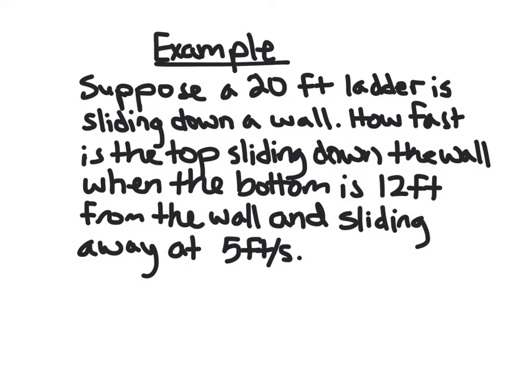So here's the classic first example a lot of people see. It's the ladder sliding down a wall. Suppose you have a 20-foot ladder up against a wall, and it's sliding down. We want to know how fast is the top sliding down the wall when the bottom of the ladder is 12 feet away from the wall on the floor and sliding away at 5 feet per second.